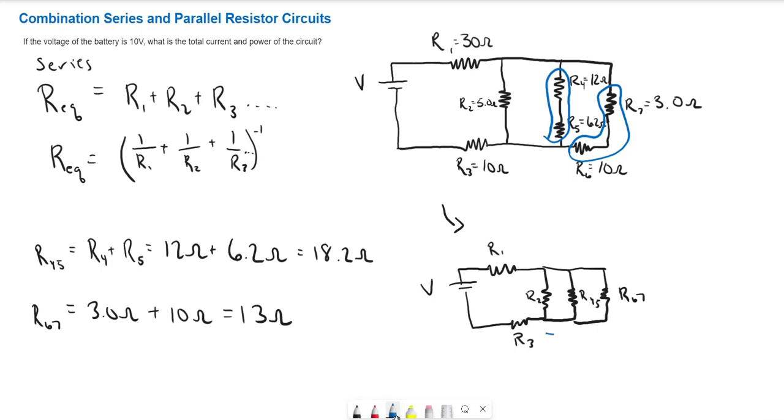And now what we can do is take these three resistors that are in parallel and find the equivalent resistance of them. And then we're just going to have three resistors.